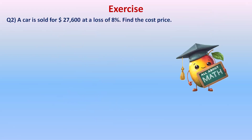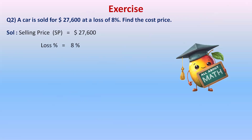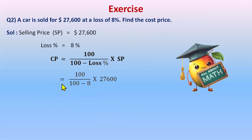Let's do another example. A car is sold for $27,600 at a loss of 8%. Find the cost price. 'Sold' means the selling price is $27,600 and loss percent is 8%. Since loss percent is given, subtraction will be in the denominator: Cost Price = (100 / (100 − Loss%)) × Selling Price = (100 / (100 − 8)) × 27,600.